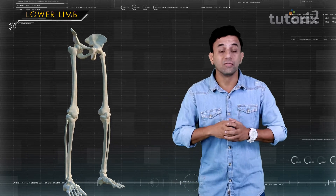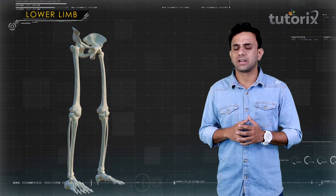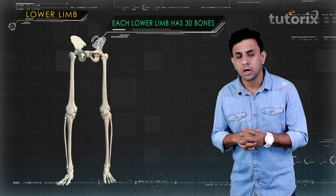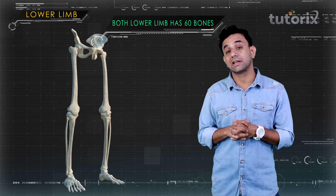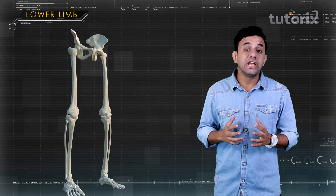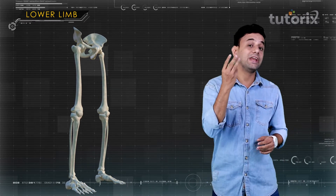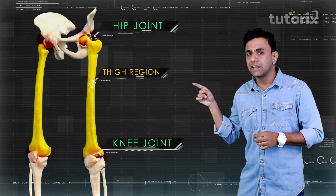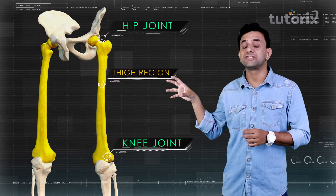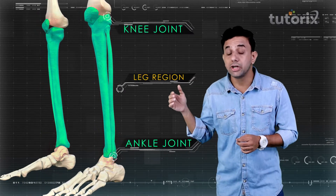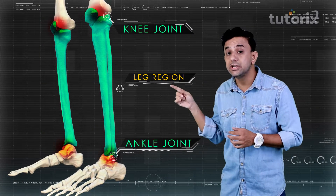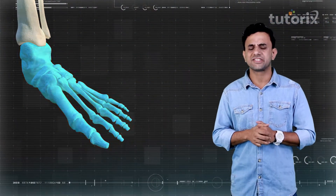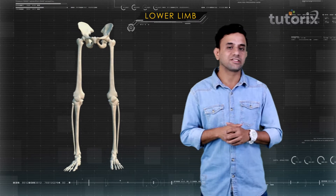In this session, we will mainly talk about the lower limb of the appendicular skeleton. Each lower limb has 30 bones, so both lower limbs together have 60 bones in totality. The lower limb is divided into three main regions: the thigh, between the hip joint and knee joint; the leg, from the knee joint to the ankle joint; and the foot, distal to the ankle joint.